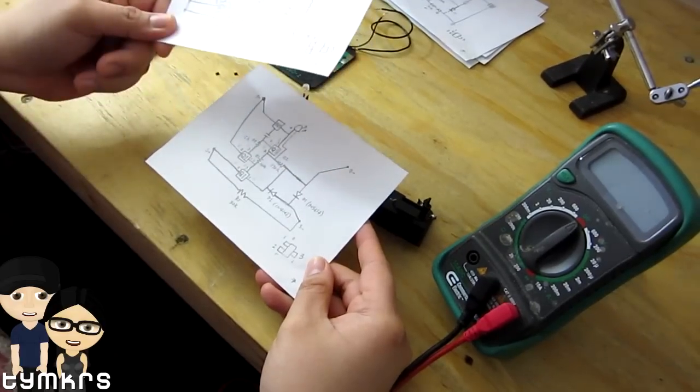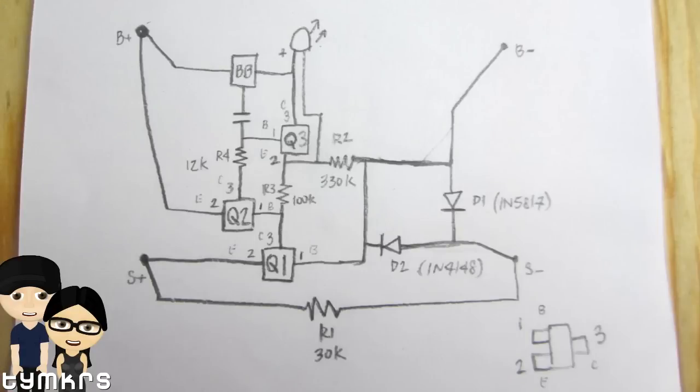So what I did then after that was I focused on the different power points and the ground points. And then I more specifically drew where the things were. I also wrote out the, what's it called, the resistance values and such.